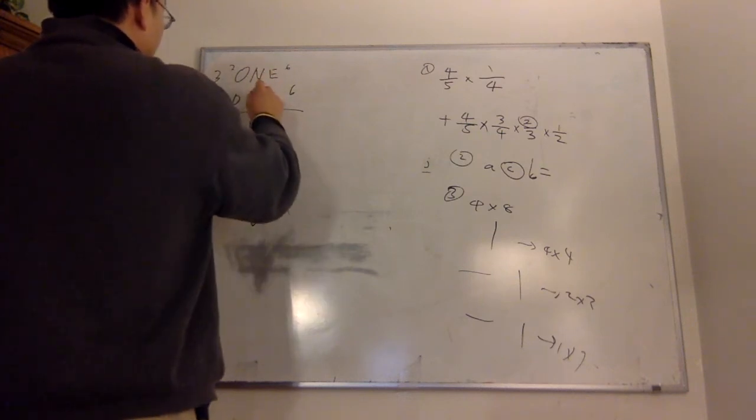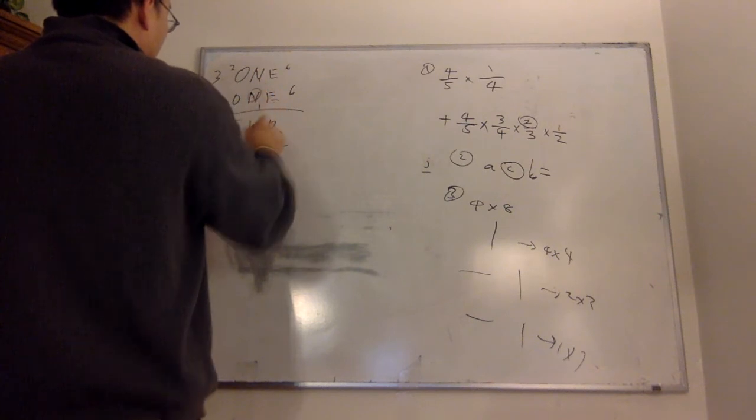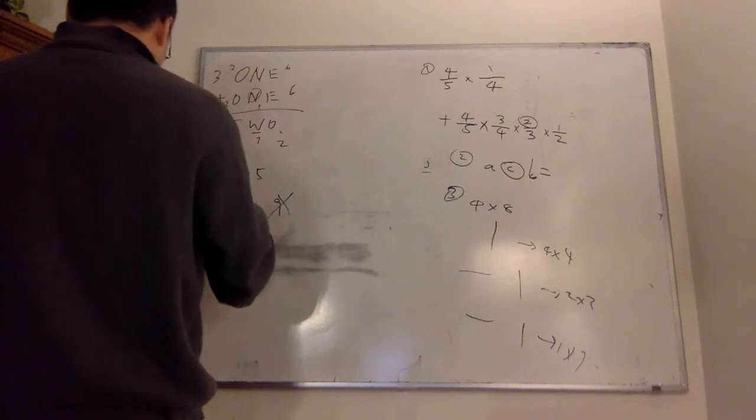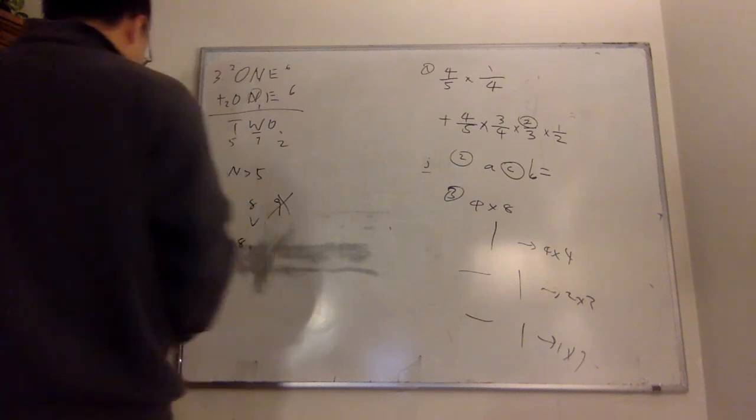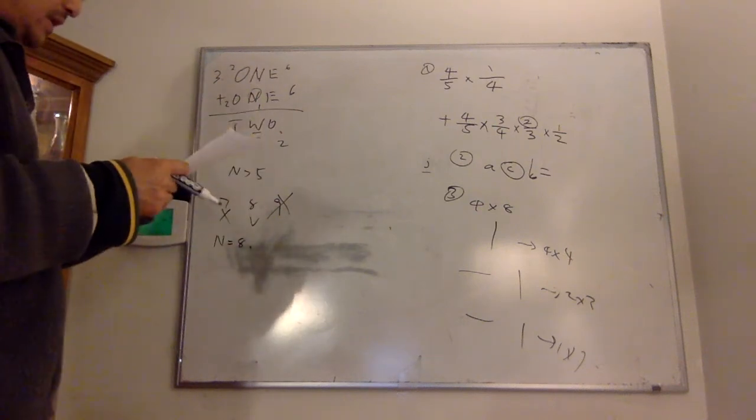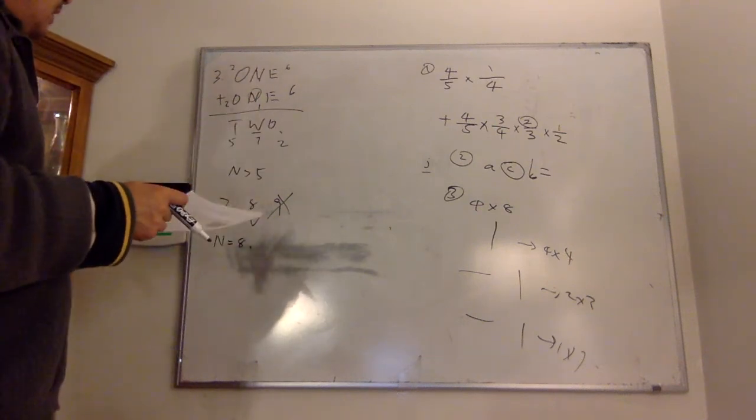7 plus 7 plus 1 will give you 15, which will conflict with t. So that's not okay. So n equals 8, which is just to throw out all the possibilities and get the result out.